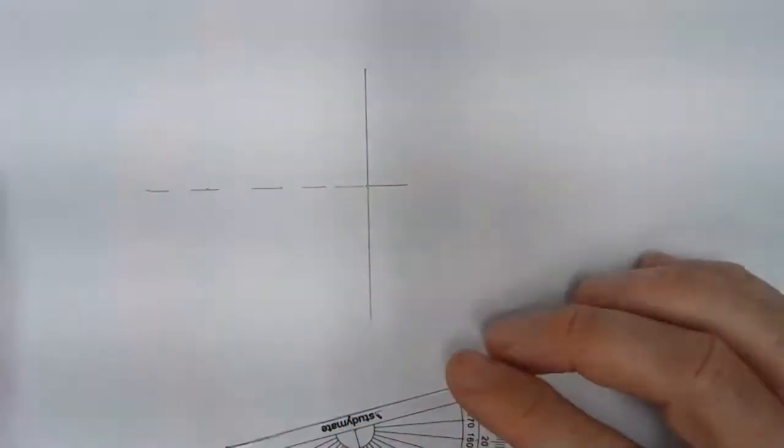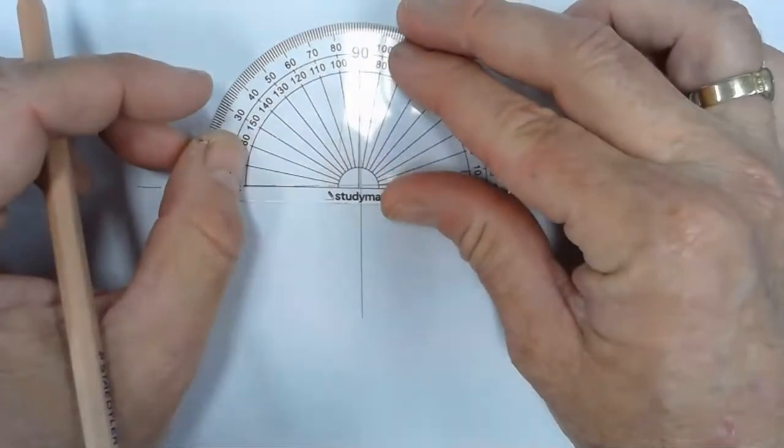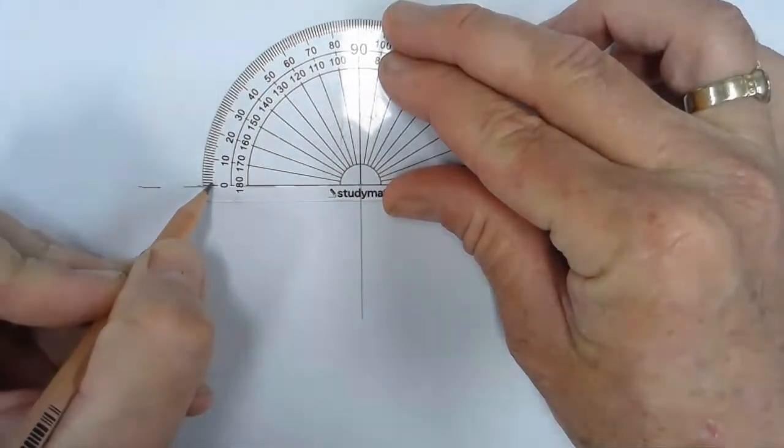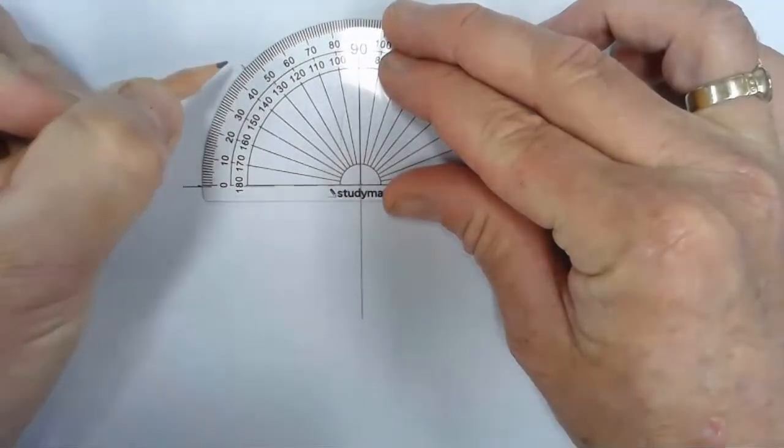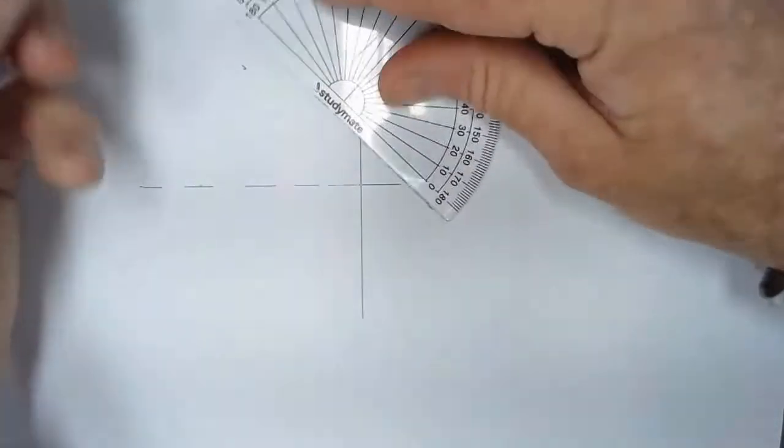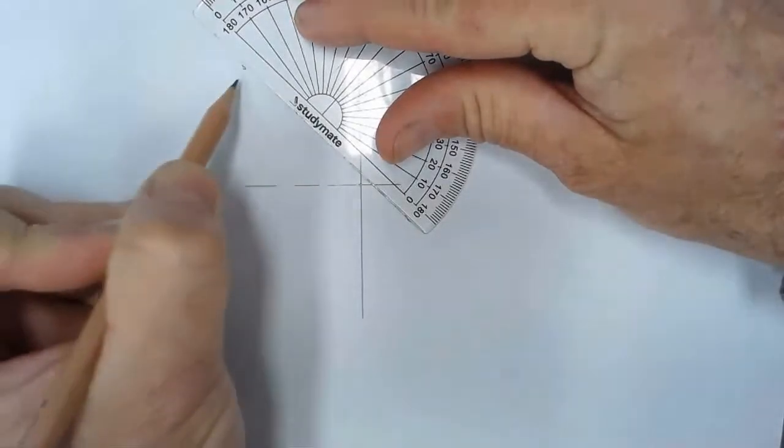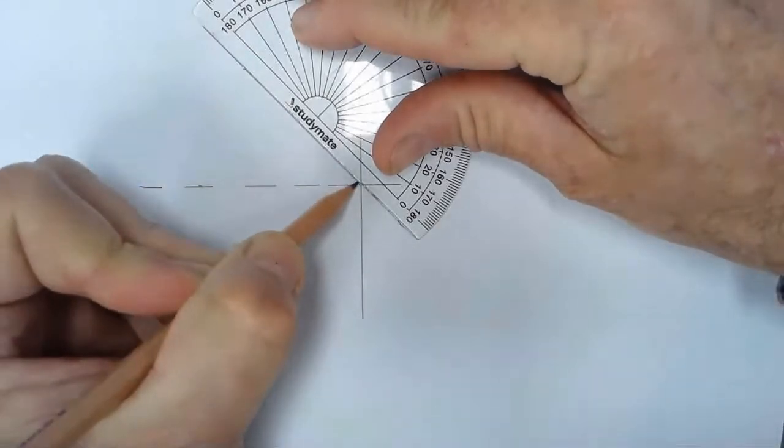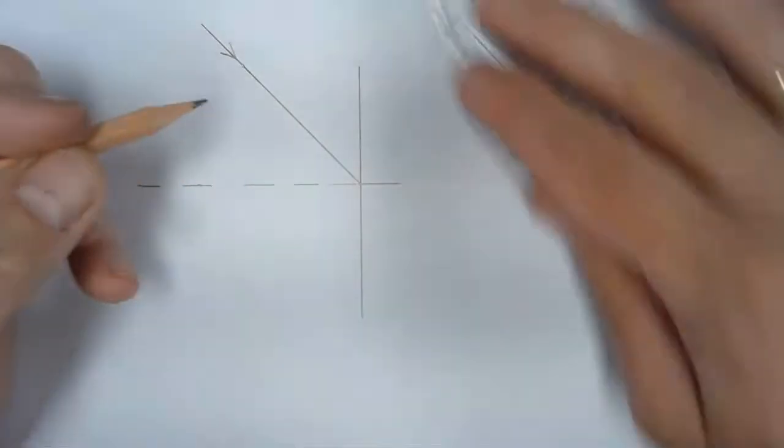Okay, now we're going to set up our incident ray at 45 degrees. We're going to set up our protractor here and work at 45 degrees from the normal. 40, 45. And of course we've got two points here again. So from the normal across to this point. And that's our incident ray and we know that's 45 degrees.